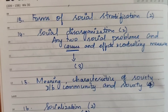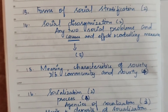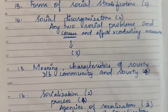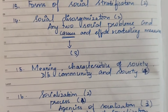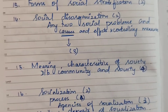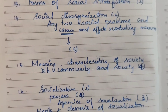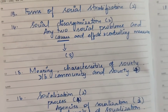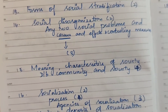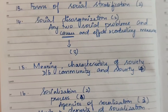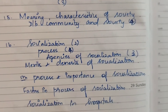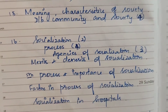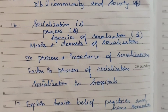Thirteenth question: Forms of social stratification — asked 2 times. Social stratification — asked once. Forms of social stratification for 15 marks. Fourteenth question: Social disorganization — asked 2 times. Any 2 social problems with causes, effects, and controlling measures — one 15-mark question. Causes of social disorganization asked 3 times. Fifteenth question: Meaning and characteristics of society, differentiate between community and society — asked 4 times for 5 marks and once for 15 marks.